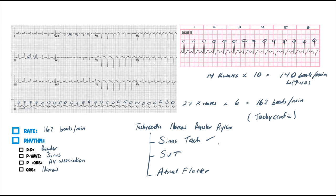I'm almost positive it's sinus tach, but 100%? No. How would I differentiate? Slow the heart rates down — that'll help you recognize whether it's sinus tach, SVT, or atrial flutter. Another way is to give them fluids. Sometimes sinus tach is just because someone has a fever or they're dehydrated — you give them fluids and the heart rate starts to slow down, or you give them antipyretics and the fever starts to subside.